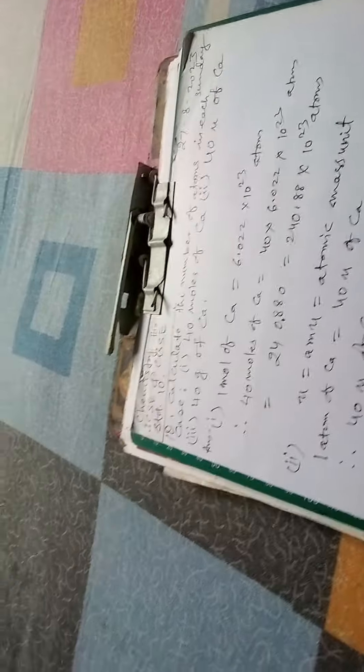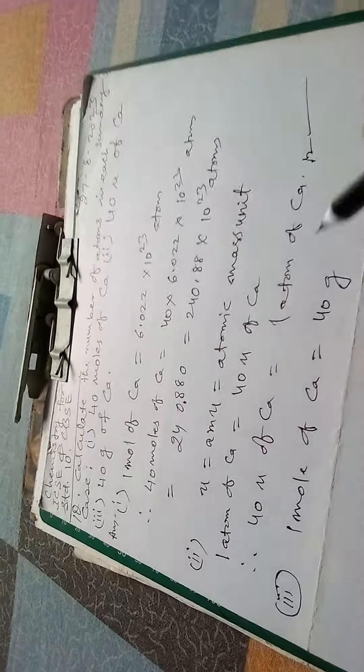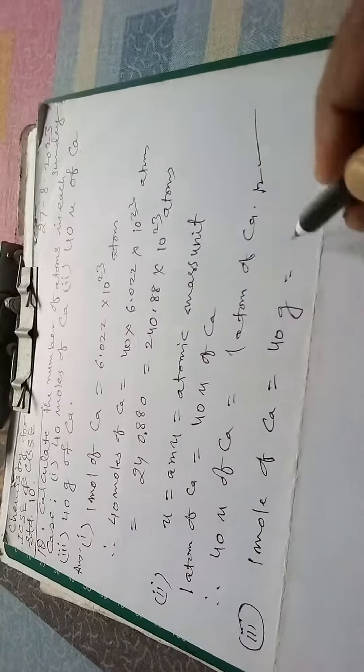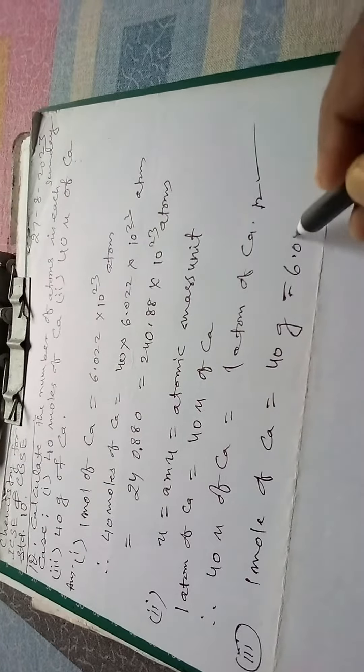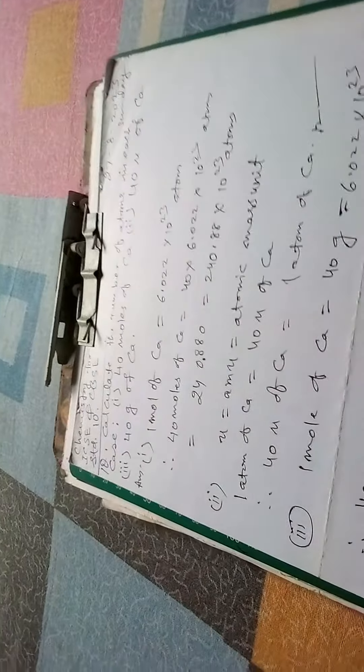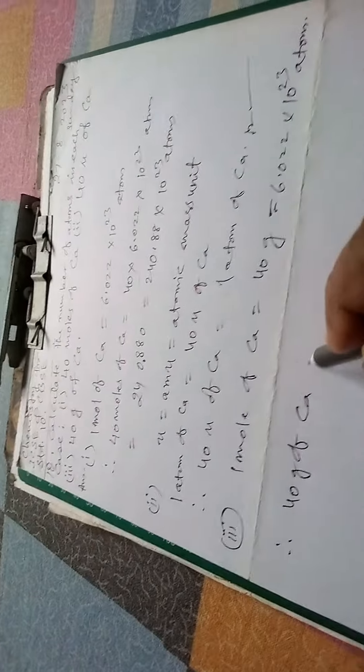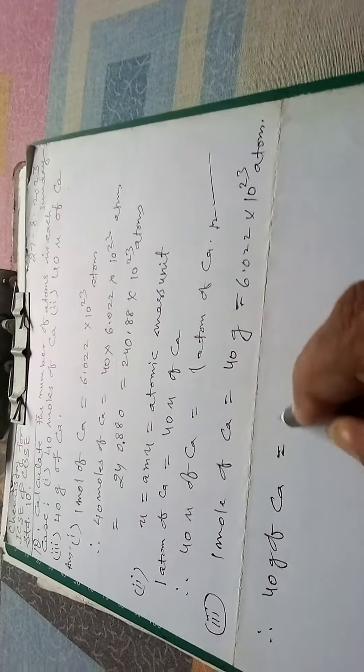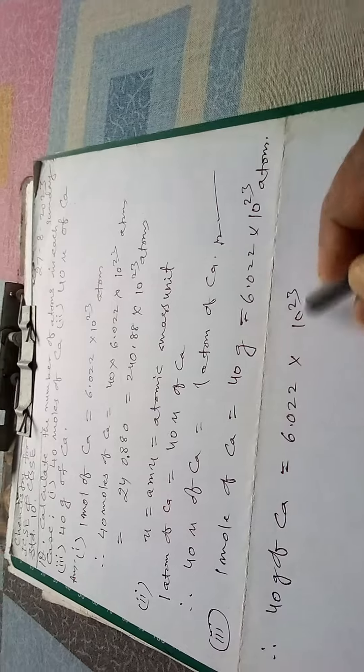And now third number, that is 40 grams of calcium. You know that one mole of calcium is equals to 6.022 into 10 to the power 23 atoms. Therefore, we can say that 40 grams of calcium is equals to 6.022 into 10 to the power 23 atoms.